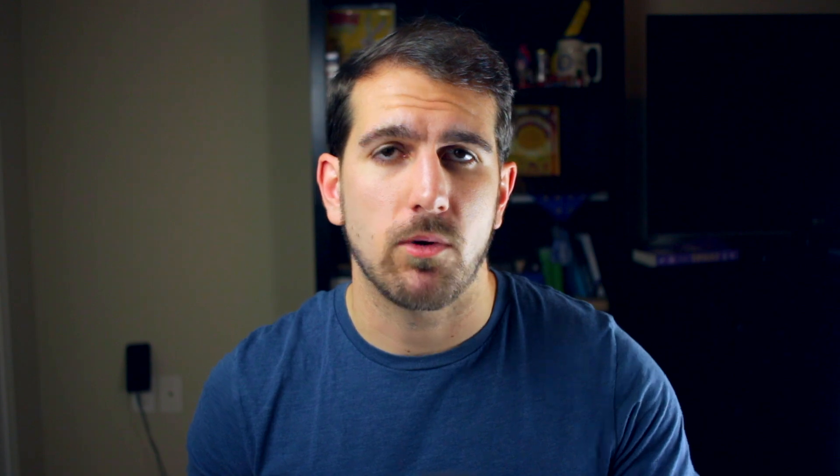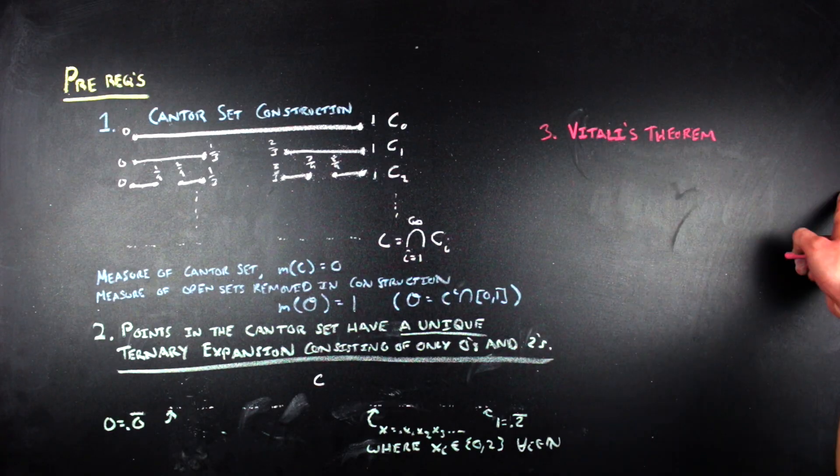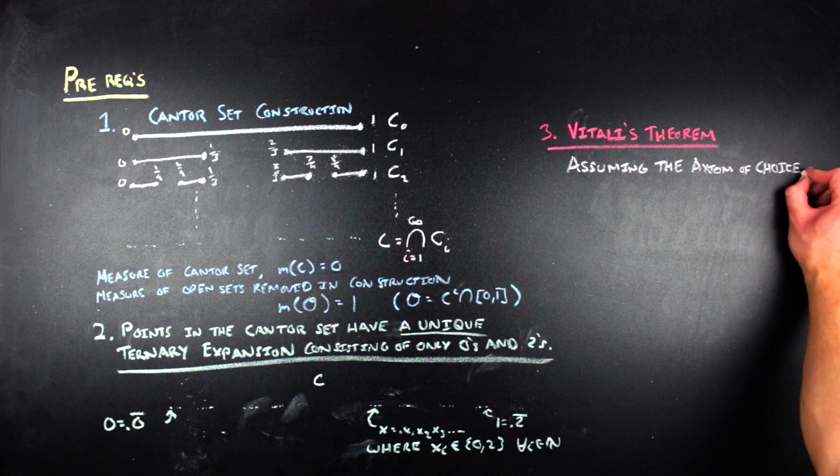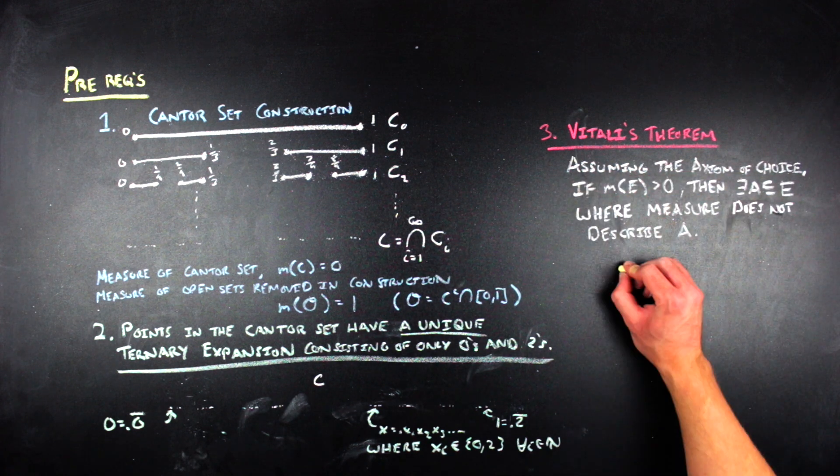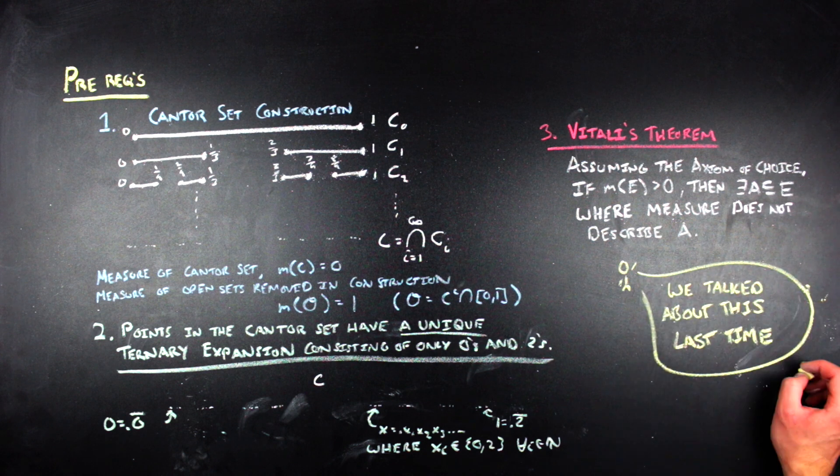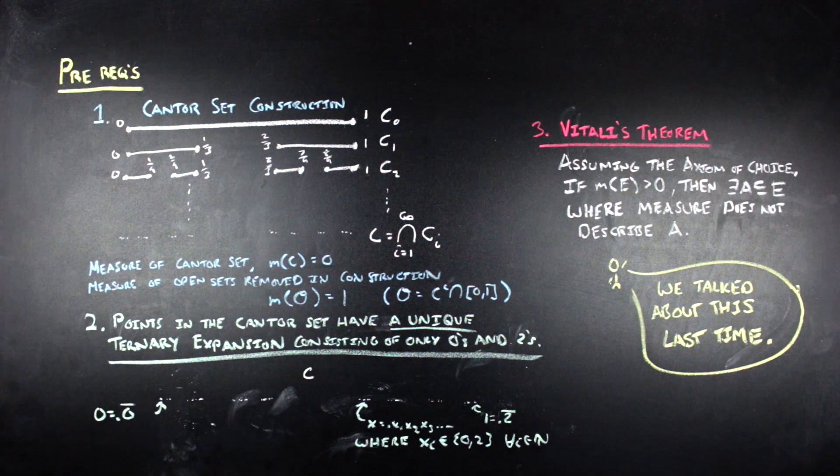The third and final thing to keep in mind is what we talked about last time I did a video at the chalkboard, which is Vitali's theorem. That is, if a set has positive measure, assuming the axiom of choice, then it must have a subset where measure is not an adequate descriptor of that subset.